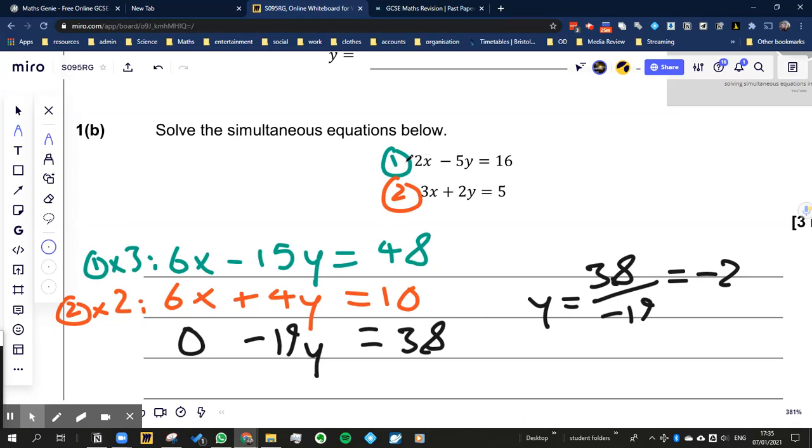So with these two equations, we've got 2x minus 5y is equal to 16, 3x plus 2y is equal to 5. Now the issue we've got is that 2 doesn't go into 3 and 2 doesn't go into 5.